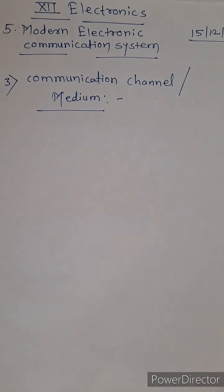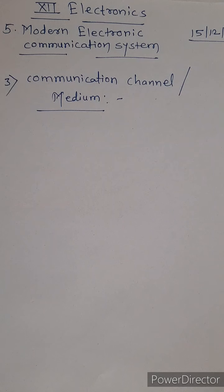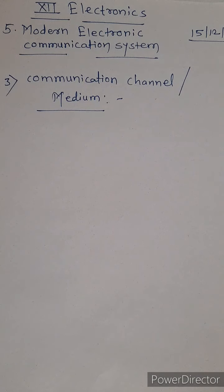The input information is processed and then transmitted by the transmitter towards or through the channel or medium. A medium or channel is nothing but a path or a way through which input information travels a longer distance. The communication channel means the path, the way through which information travels.